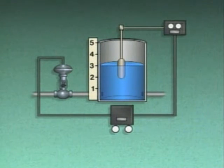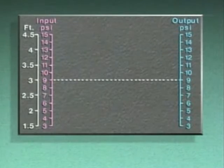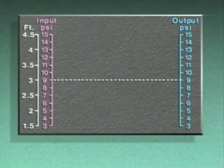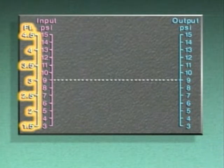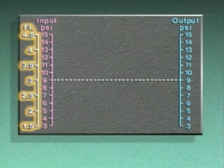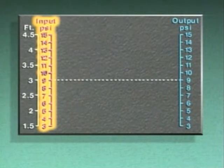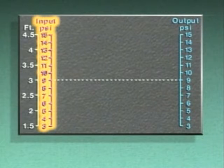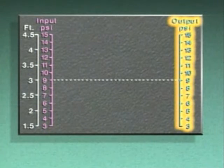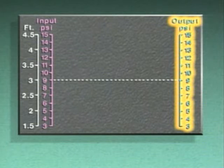We can tell more about how the temporary change in water level affected the system if we plot the control signals on a graph. On the graph, the scale on the far left is marked off in feet to indicate the water level in the tank. The next scale indicates the value of the input signal to the controller in pounds per square inch, or PSI. The scale on the right indicates the value of the output signal from the controller. It, too, is in pounds per square inch.